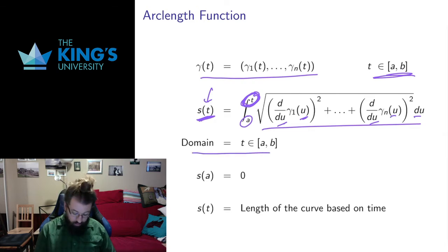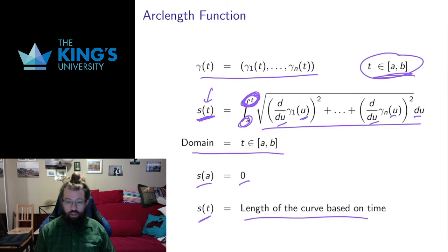So I get this function, its domain is the same domain as the curve. It tells me what happens over the time that I move along this curve. At a it's zero because then I'll integrate from a to a. That's no distance at all. That will be zero. So it starts at zero.